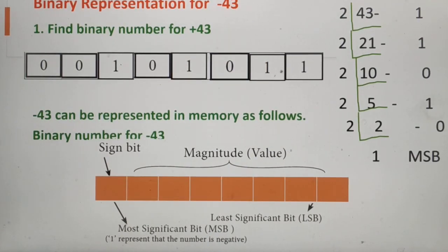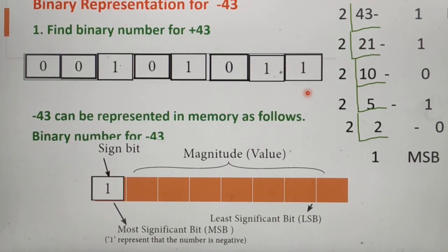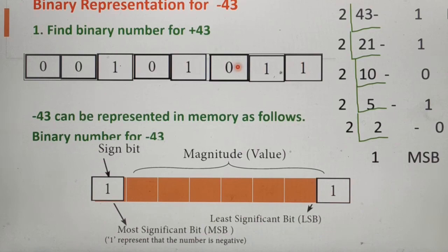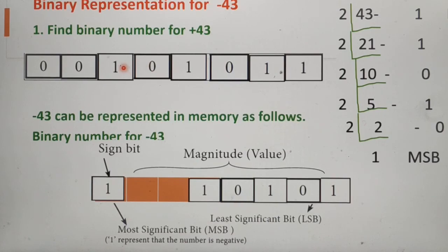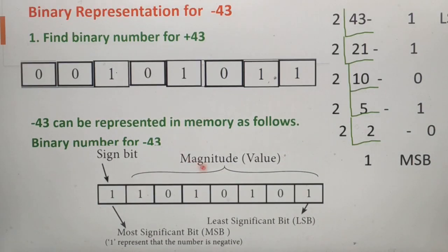Our given number is negative — minus 43 — so we put 1 in the sign bit. Then check the binary number from right to left for the first 1. Our first digit itself is 1, so we keep that same 1. Then we invert all the remaining binary digits: 1 inverted to 0, 0 inverted to 1, 1 inverted to 0, 0 inverted to 1, 1 inverted to 0, and 0 inverted to 1. This is the binary representation for minus 43 in computer memory.